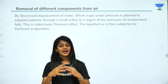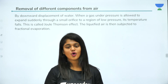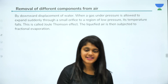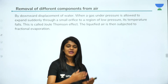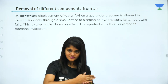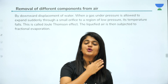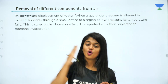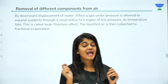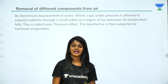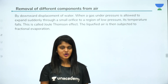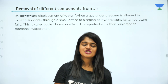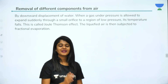Next, nitrogen is collected by downward displacement of water. We have also seen the Joule-Thomson effect: when a gas under pressure is allowed to expand from a high-pressure region to a low-pressure region, the temperature suddenly falls. This is called the Joule-Thomson effect.